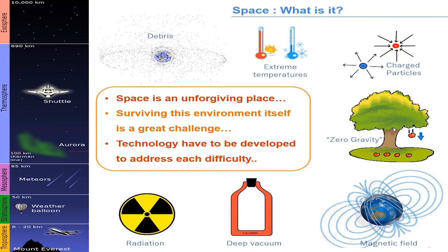Specialized protections are also required to protect satellite electronics from charged particles that are no longer shielded by the atmosphere. Zero gravity is yet another challenge that satellite designers must overcome. Deep vacuum is also a challenge — all satellites are designed to withstand deep vacuum, and components are specifically selected to avoid degassing. Special materials are used to prevent satellites from degrading in the emptiness of space.